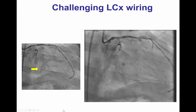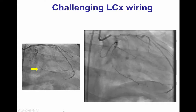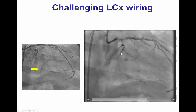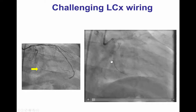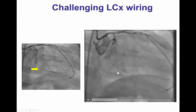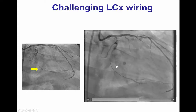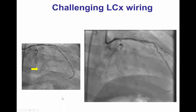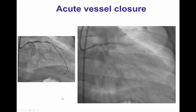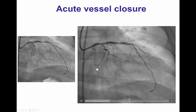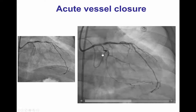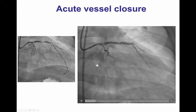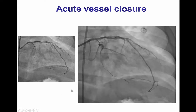However, during attempts to wire the circumflex, significant difficulty was encountered and the wire went into the subintimal plane past the area of occlusion, which subsequently caused acute closure of the second obtuse marginal branch.